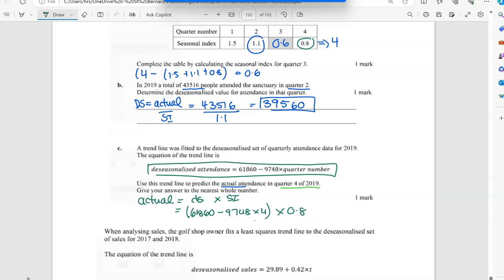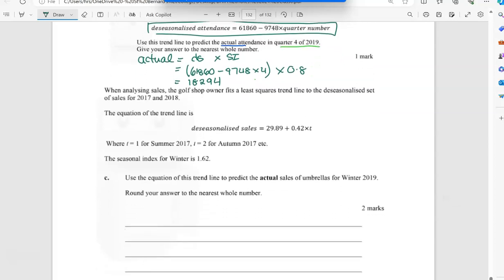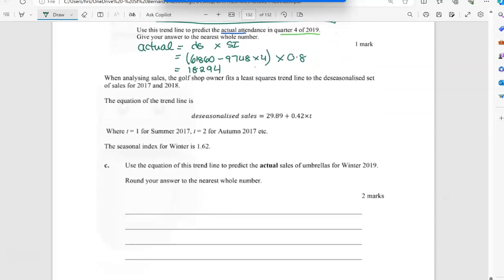When analyzing the sales, the gold shop owner fits a least squares trend line to the de-seasonalized set. So you can see they start writing de-seasonalized sales. That's why in our exam it was a little bit bad they didn't write that. And we've been given the seasonal index for winter.